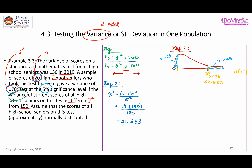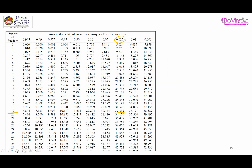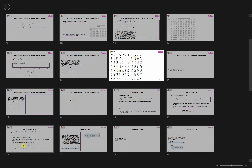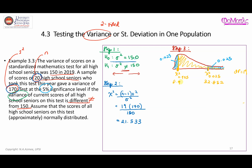For the left-side critical value, since the blue area on the right is 0.025, the area from this point extending to the left tail is 0.975. Referring to the chi-square distribution table with area 0.975 and degrees of freedom 19, the critical value is 8.907. So the two critical values are 8.907 on the left and 32.852 on the right.